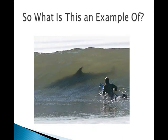Here's a famous internet photo that went around for years. It says 'surfer with shark' — well, it's not a shark, it's a dolphin. But everybody thought it was a shark because of the shape in the wave. So, is this an example of a homologous structure or an analogous structure?